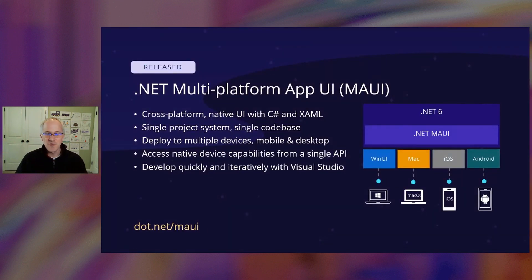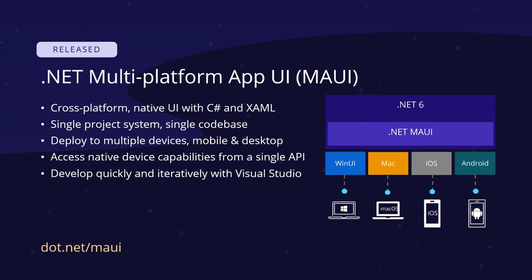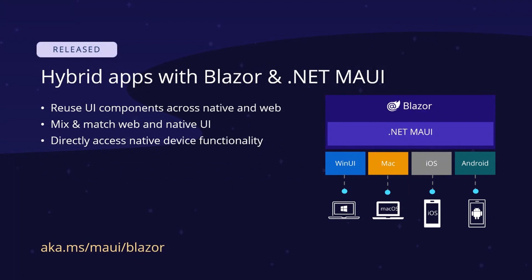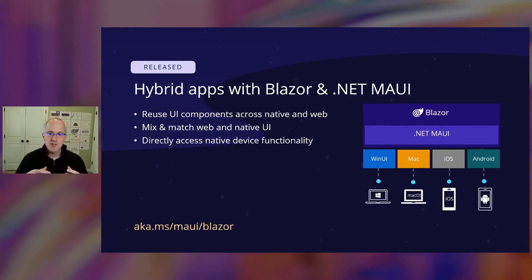.NET MAUI is the future of cross-platform UI for .NET. With .NET MAUI, you can build a single app that runs on mobile and desktop — Windows, Mac, iOS, and Android. It's the evolution of Xamarin.Forms with an improved architecture and development experience. .NET MAUI released earlier this month and is now available for production app development. It also makes it easy for web developers to create native client apps by integrating with Blazor using a hybrid approach — a hybrid of native and web. .NET MAUI enables you to embed Blazor web UI components directly into your .NET MAUI apps.